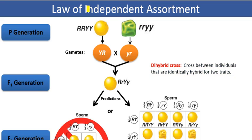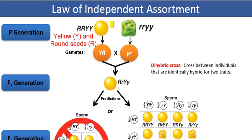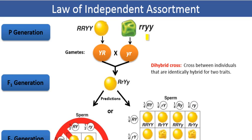For instance, the cross we have on the screen right now is an example of a dihybrid cross between a plant with the dominant phenotype — yellow round seeds, that's the dominant phenotype, seeds that are yellow and round — and a plant that has the recessive phenotype, which is green wrinkled seeds.